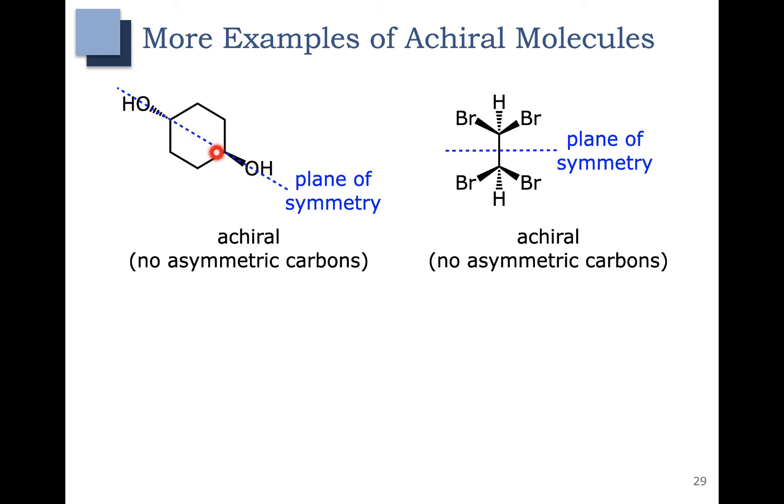On the left, you can see the plane of symmetry here. This carbon here is connected to a hydrogen, oxygen, and CH2 groups, and the CH2 groups are connected to CH2 groups which are connected to a CH over here. So these groups are the same because they're the same on both sides, so this is not an asymmetric carbon. In the molecule on the right, we have a bromine and a bromine attached to this carbon, so this is also not an asymmetric center, and down here we have a bromine and a bromine attached to this carbon, so it is also not an asymmetric carbon. Neither of these molecules have asymmetric carbons. They also have planes of symmetry, which means that these molecules are achiral.